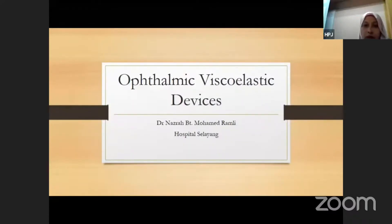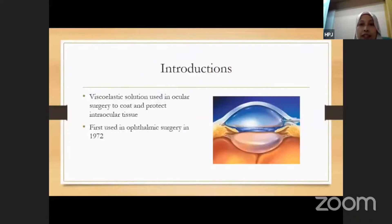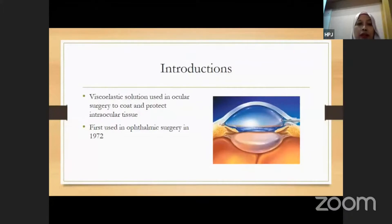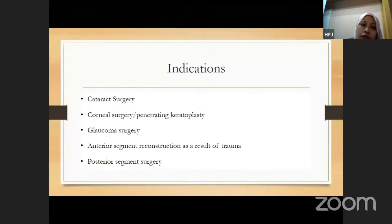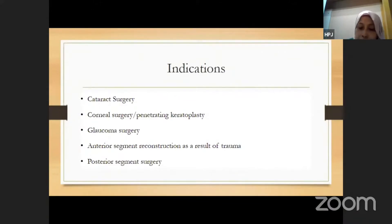My talk will be on ophthalmic viscoelastic devices. As an introduction, it's the common viscoelastic solution we use in ocular surgery, either to coat or to protect our ocular tissue. It was first used in ophthalmic surgery in 1972. The indications include cataract surgeries, corneal surgeries, PK, glaucoma surgeries — especially glaucoma filtering surgeries — anterior segment reconstruction, and posterior segment surgeries such as vitreoretinal surgery.